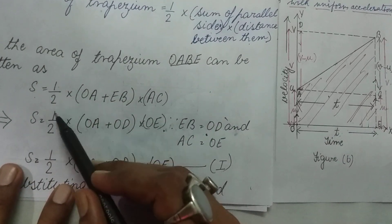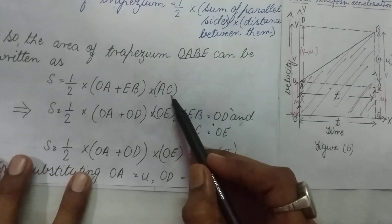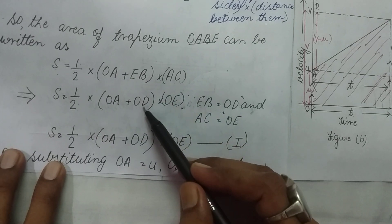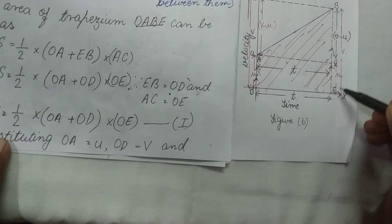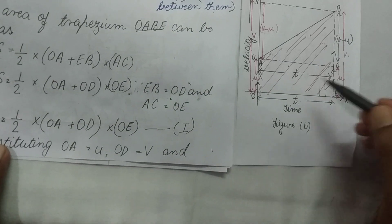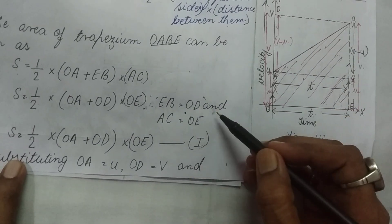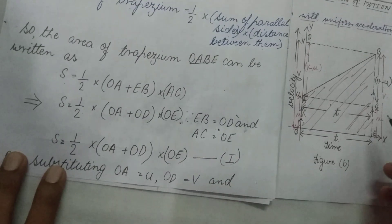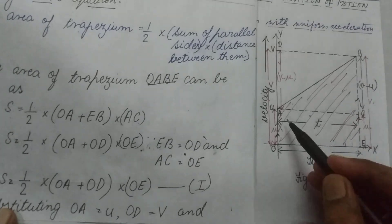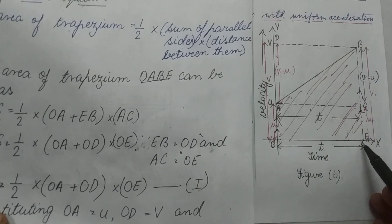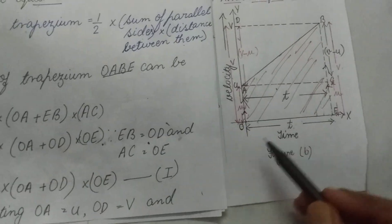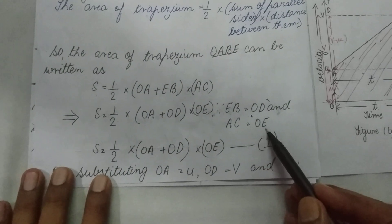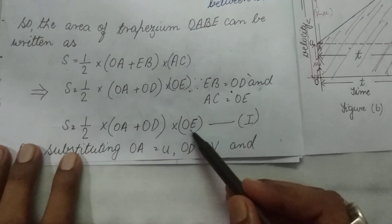The area S equals half into (OA + EB) × AC. Since EB equals OD, both have value V, and AC equals OE. So S equals half into OA plus OD into OE. Substituting: S equals half into (u + v) × t.